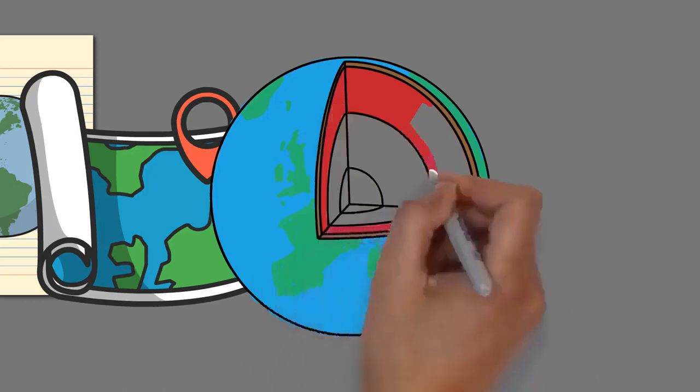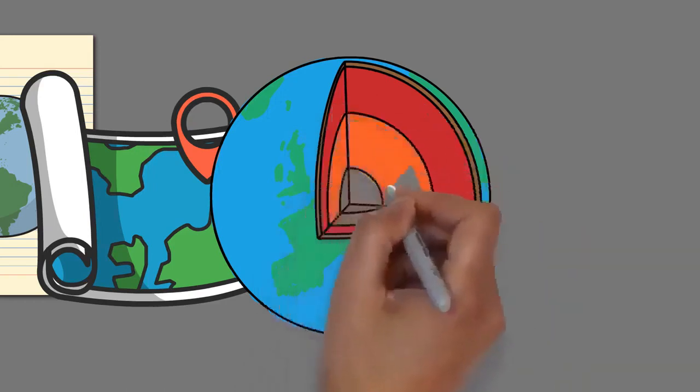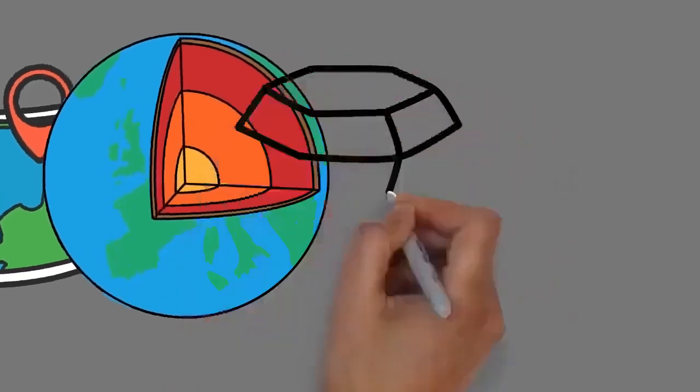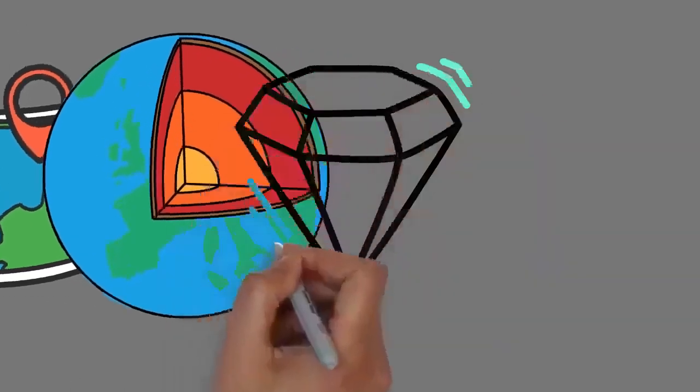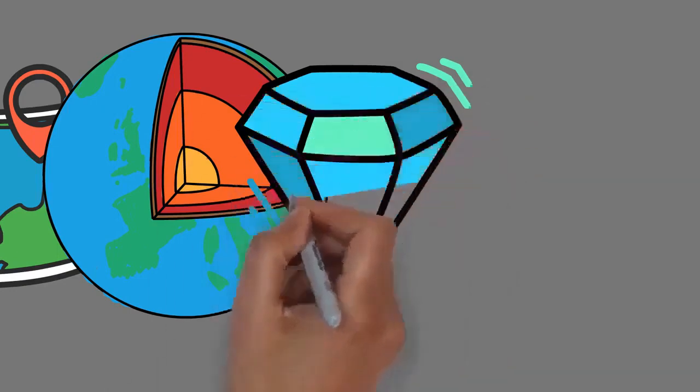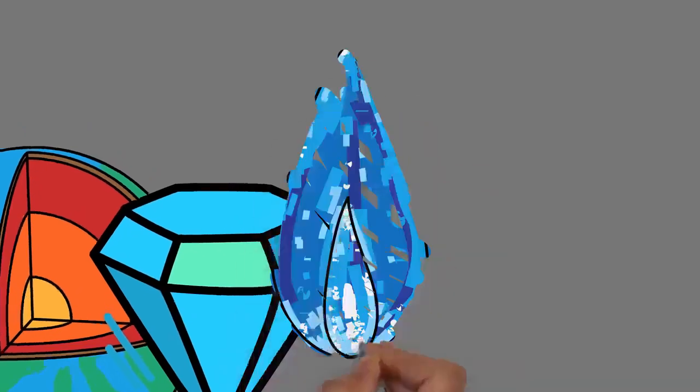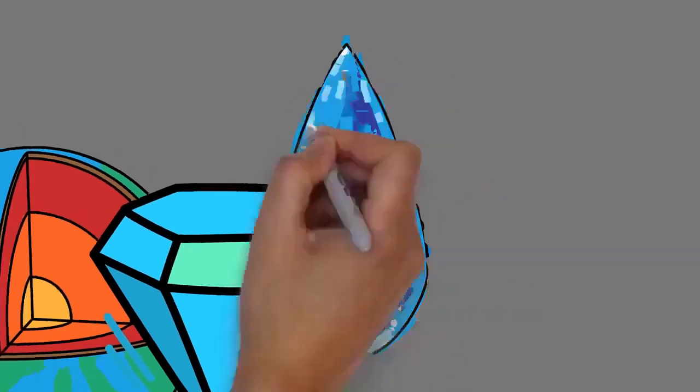Earth is rounded into an ellipsoid with a circumference of about 40,000 kilometers. It is the densest planet in the solar system. Of the four rocky planets, it is the largest and most massive. Earth is about 8 light minutes away from the sun and orbits it, taking a year, about 365.25 days, to complete one revolution.